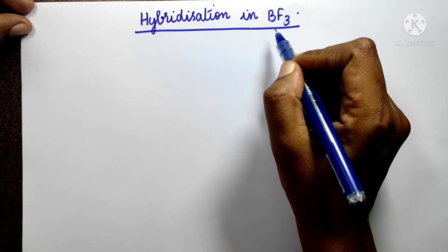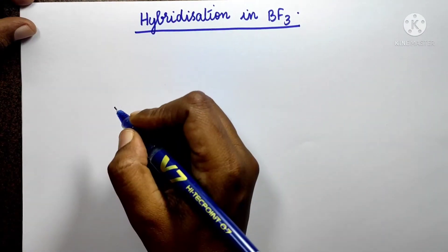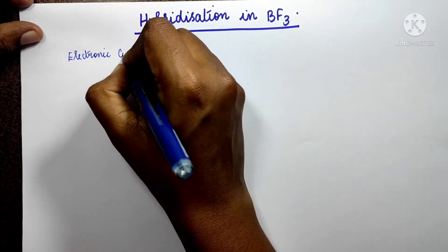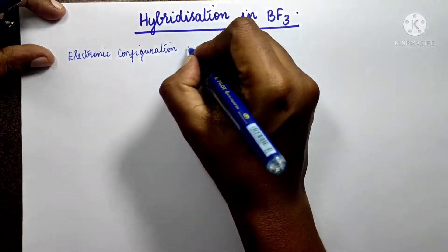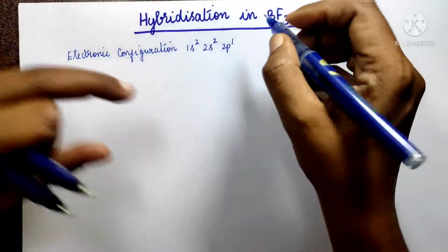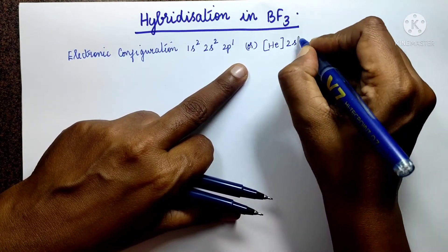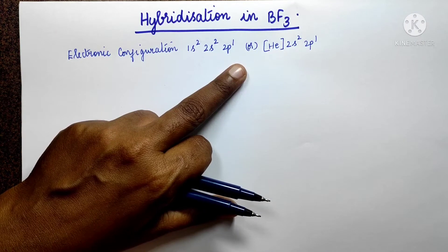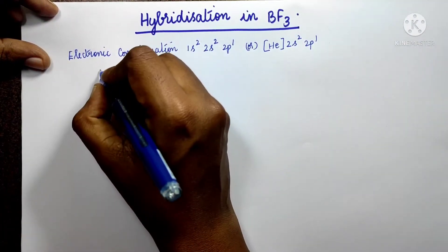Let's take the ground state electronic configuration for Boron. Boron has atomic number 5. The electronic configuration is 1s², 2s², 2p¹. We can write this using helium's configuration as [He] 2s², 2p¹. For bond formation, only the outermost valence electrons are involved, so we focus on those.